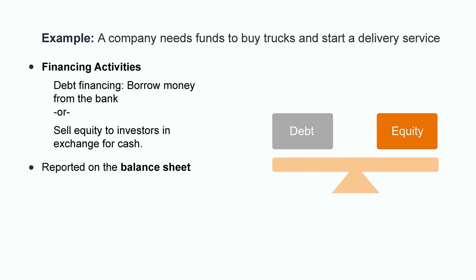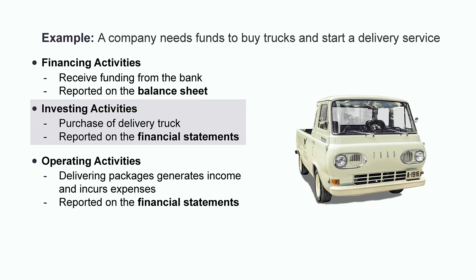Let's say they receive the financing. Now that the company has the funds, it's time to purchase their delivery vehicles. These transactions fall under the investing activities of an organization and would again be reported in the company's financial statements for external users to understand how the organization is putting their funds to use. Now that the company has secured their delivery trucks, it's time to start delivering packages. Each delivery generates revenue but also adds additional expenses, such as driver wages and fuel. These transactions show up on a company's income statement, providing external users with information about the organization's profitability.